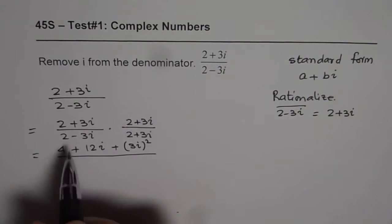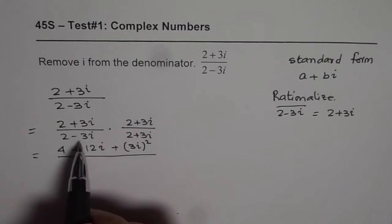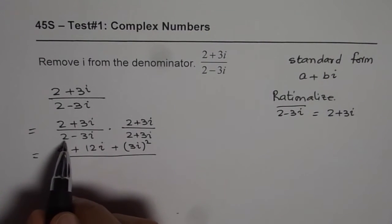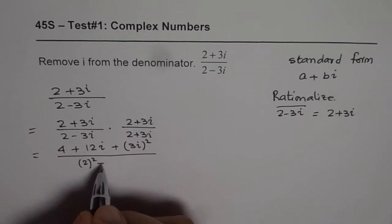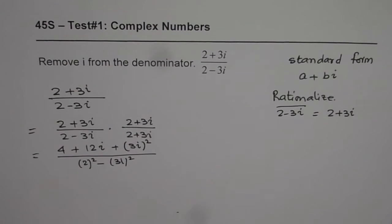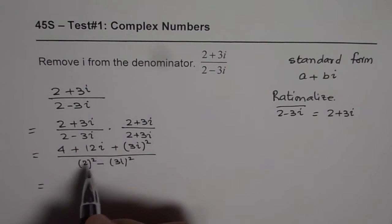Divided by, in the denominator, we have product of difference and sum, which gives us a square minus b square, so which is 2 square minus 3i square. Now we can expand this.